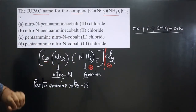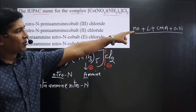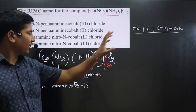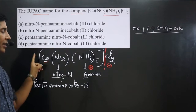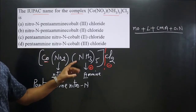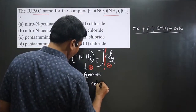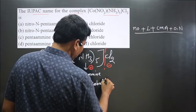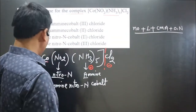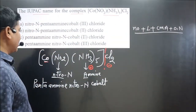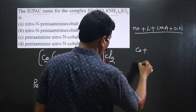Next we have the central metal atom. Since it is present in the cationic complex, we use its common name, which is cobalt. After this, we have to write its oxidation number. Let's calculate the oxidation number — we have cobalt, NO2 with a minus one charge (it is a negative ligand).